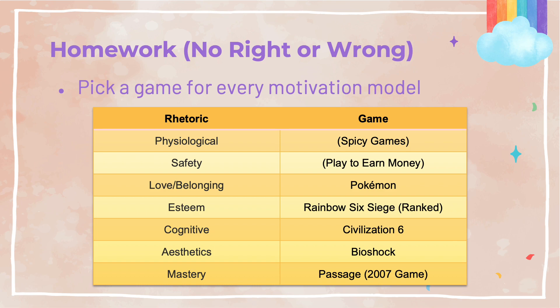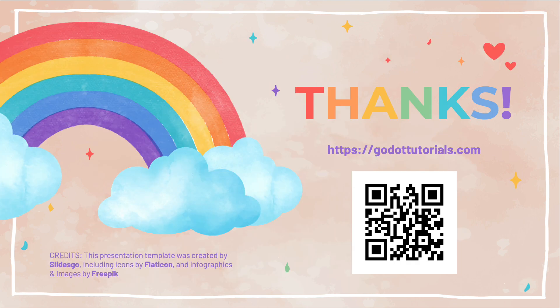Let's look at some homework. It's very straightforward: all you need to do is pick a game you've played and match it to a hierarchy need in the motivational model. Don't use sequels and prequels, and remember, there are no right or wrong answers. Just try to see a correlation between motivation and the games people play. That's all I have for you. Thank you so much for subscribing to my channel and liking my video. I look forward to seeing you in the next episode. Have an amazing day.